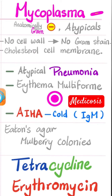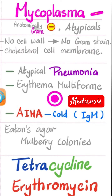Which means if I have mycoplasma pneumonia and I am your patient and you're trying to diagnose me via gram-stain, I'll have a moment with you. The whole purpose of gram-stain is to stain the cell wall, but mycoplasma doesn't even have a cell wall. So why are you ordering a gram-stain?